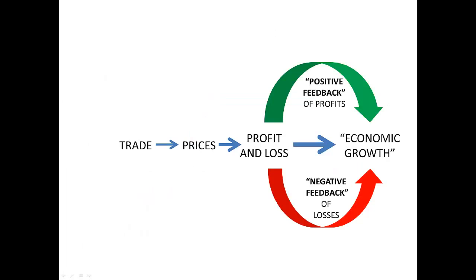Let me think through this schematically. I'll go back to the chart from Unit 1, which talks about the basic market process. It starts with trade — trade is mutually beneficial, trade makes both parties better off. When we add money, we have prices. With money prices for all goods, entrepreneurs can compare the value of output against the opportunity cost of inputs, which is known as profit and loss accounting — what von Mises referred to as economic calculation.